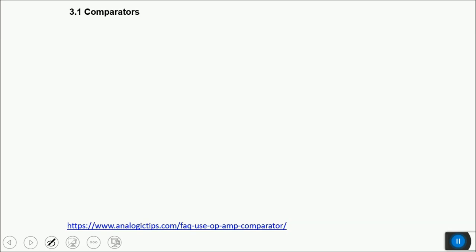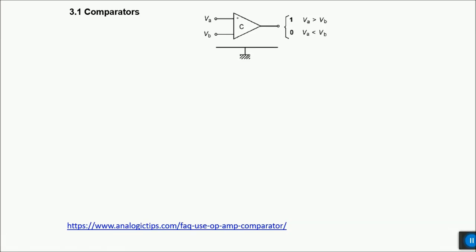Now we start with individual components requiring more detail, beginning with digital comparators. We will look at comparator characteristics, their applications, their limitations, and how to handle them. A comparator is a device similar to an operational amplifier in appearance but fairly different in operation.